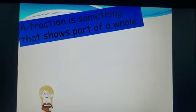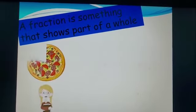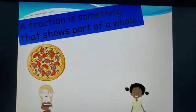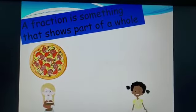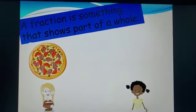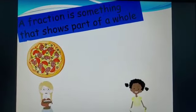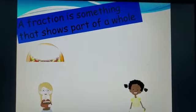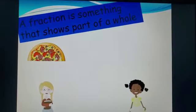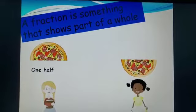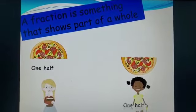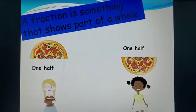For example, Alison is having pizza for tea and her friend Beck is coming over. Alison wants to share her pizza equally with her friend. Alison divides her pizza equally between two. Alison has one half. Beck has one half.